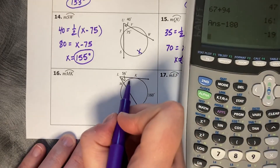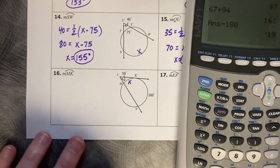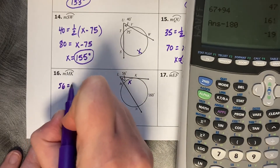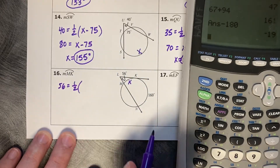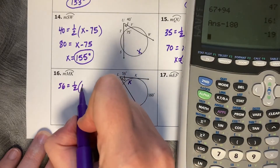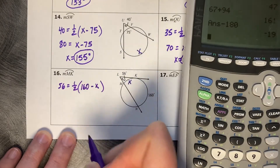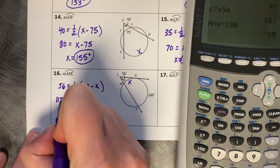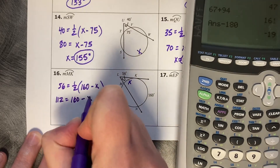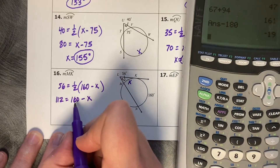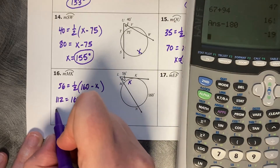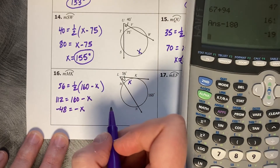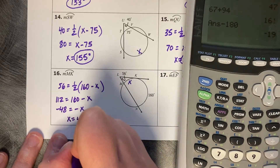The measure of arc MK — that's the smaller arc. So we set it up with the large arc known: 56 equals one half of 160 minus X. Multiply by 2: 112 equals 160 minus X. Subtract 160: negative 48 equals negative X. Divide by negative 1, and X equals 48.